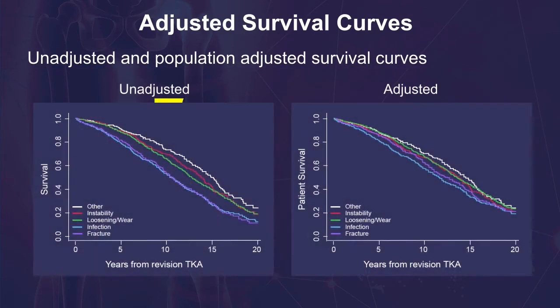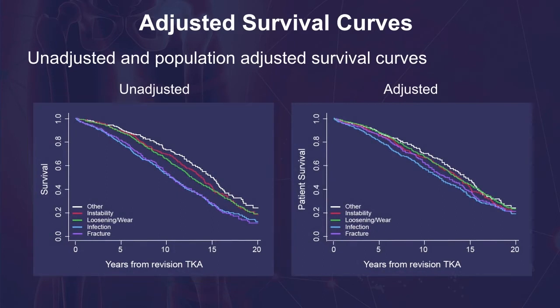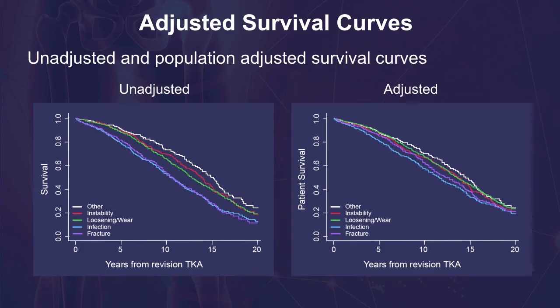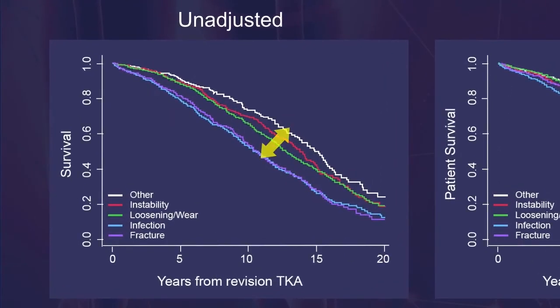The figure on the left displays the unadjusted Kaplan-Meier survival curves, and the figure on the right displays the IPW population-adjusted curves. When comparing these figures, we observe greater differences in survival for the total knee arthroplasty revision categories in the unadjusted survival curves.